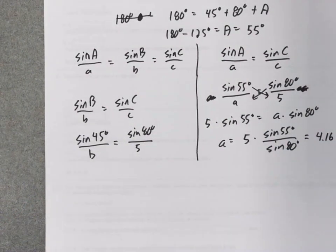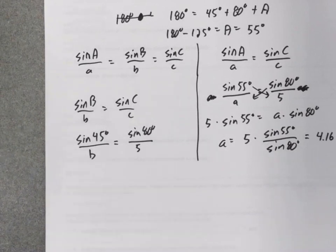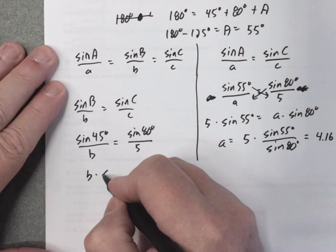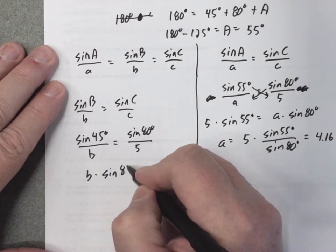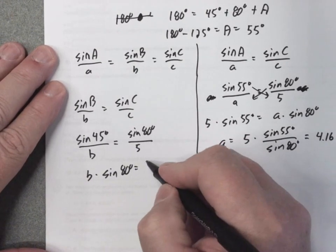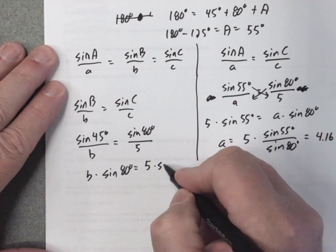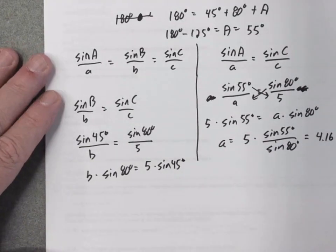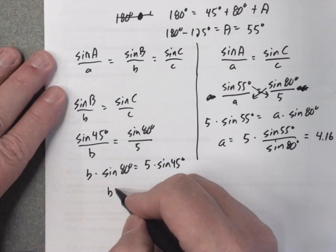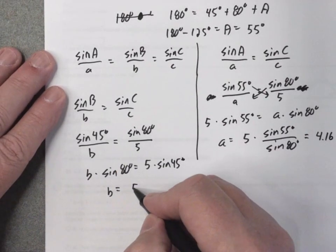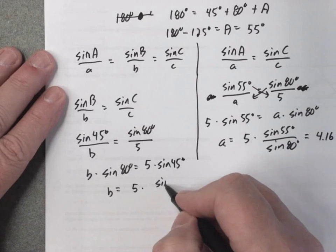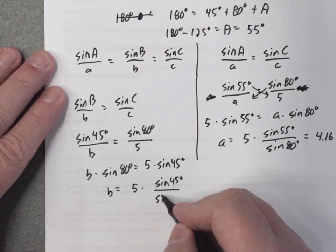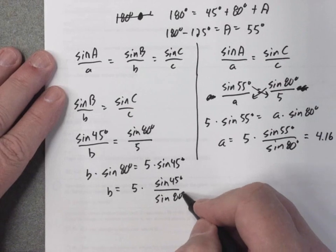Here I can solve for B. If I cross multiply, B times the sine of 80 degrees equals 5 times the sine of 45 degrees. If I divide both sides by the sine of 80 degrees, I get B equals 5 times the sine of 45 degrees over the sine of 80 degrees.